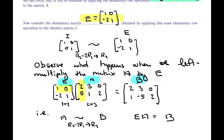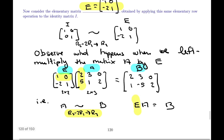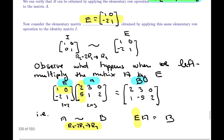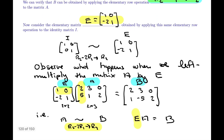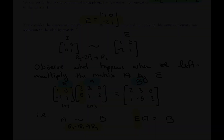To summarize: applying an elementary row operation directly to a matrix yields the same result as left-multiplying that matrix by the elementary matrix corresponding to that elementary row operation. That is the key result of this section, and that's the end of this video.